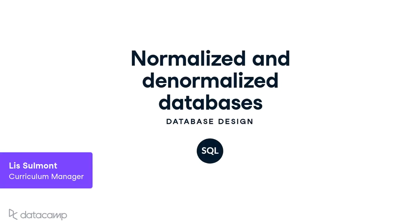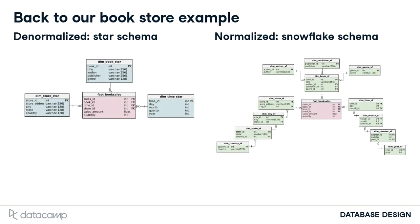Welcome back. Now that we have a grasp on normalization, let's talk about why we would want to normalize a database. You should be familiar with these two schemas by now. They're both storing fictional company data on the sales of books in bulk to stores across the US and Canada. On the left, you have the star schema with denormalized dimension tables, and on the right, you have the snowflake schema with normalized dimension tables.